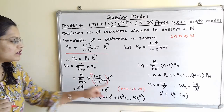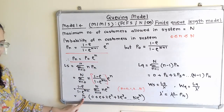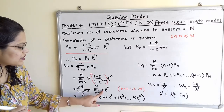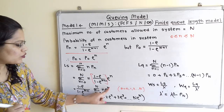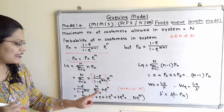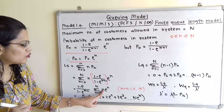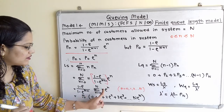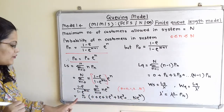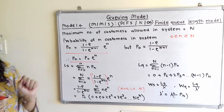The constant term [(1 − ρ) / (1 − ρ^(N+1))] is nothing but P(0). So we write Ls = P(0) × [0×ρ^0 + 1×ρ + 2×ρ^2 + 3×ρ^3 + … + N×ρ^N]. This is the formula used to calculate the length of the system.